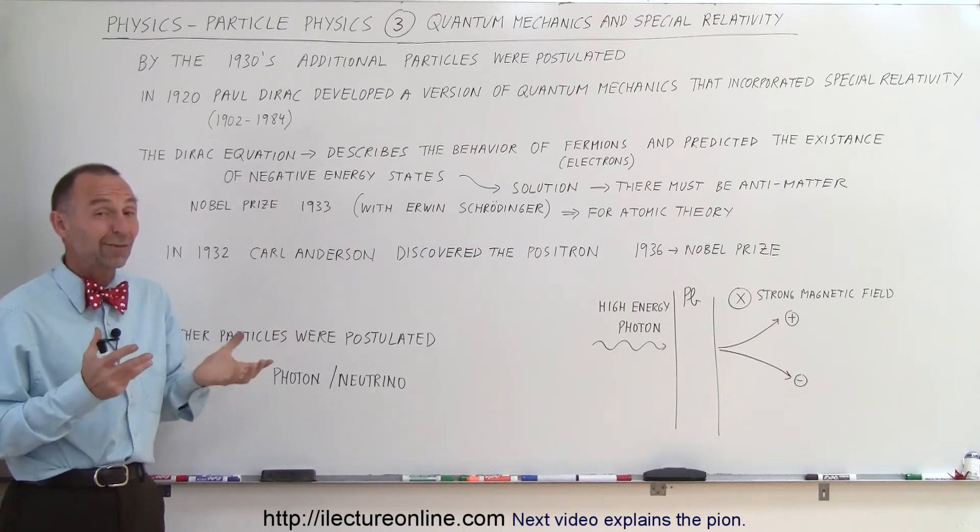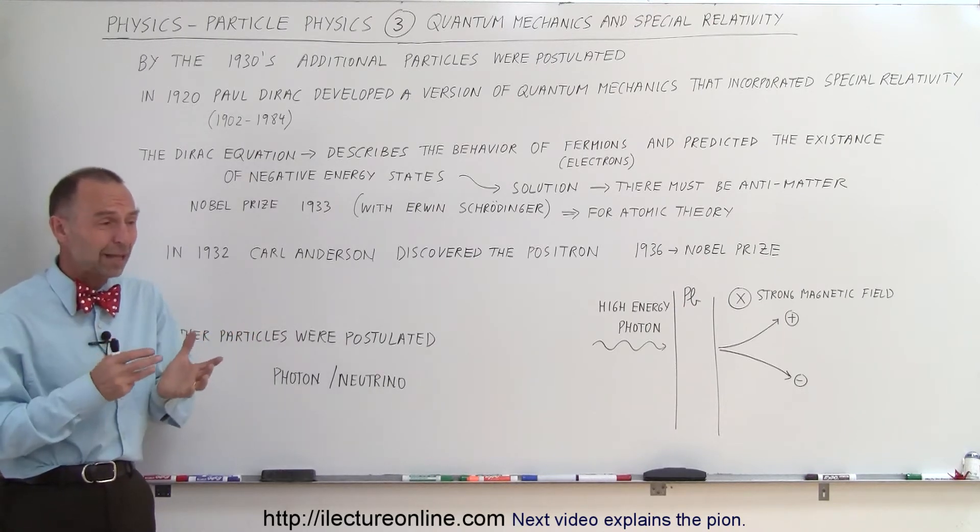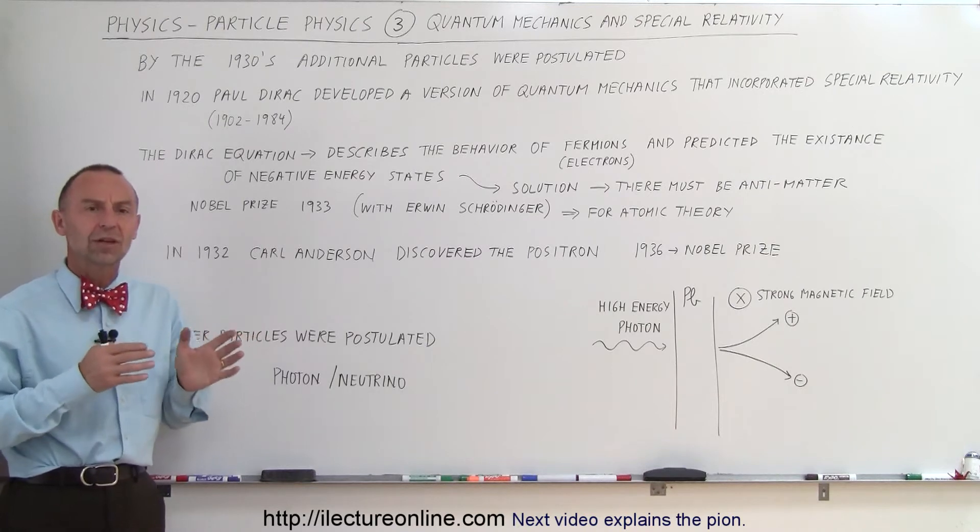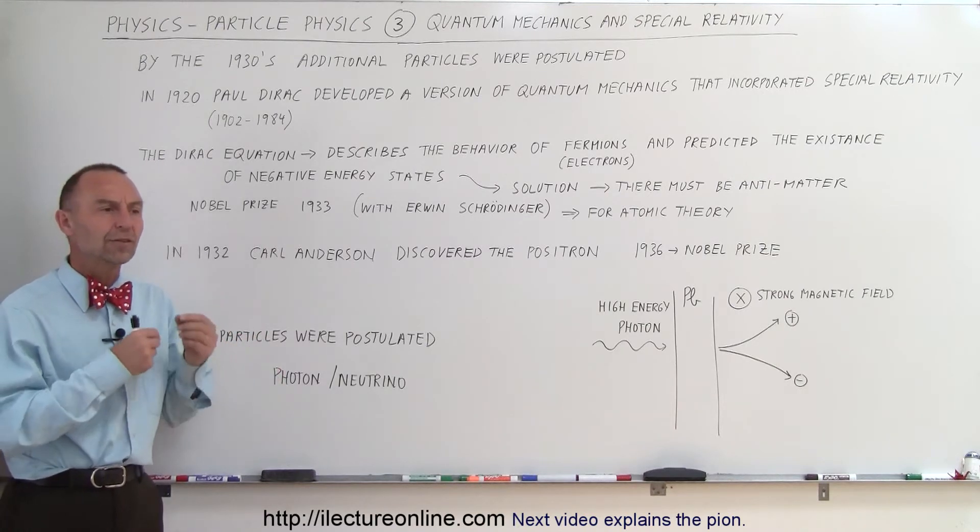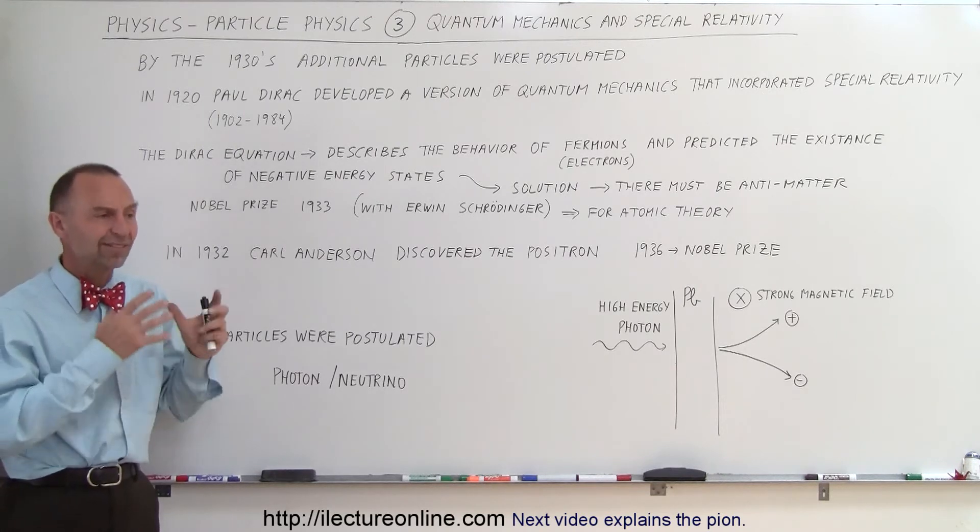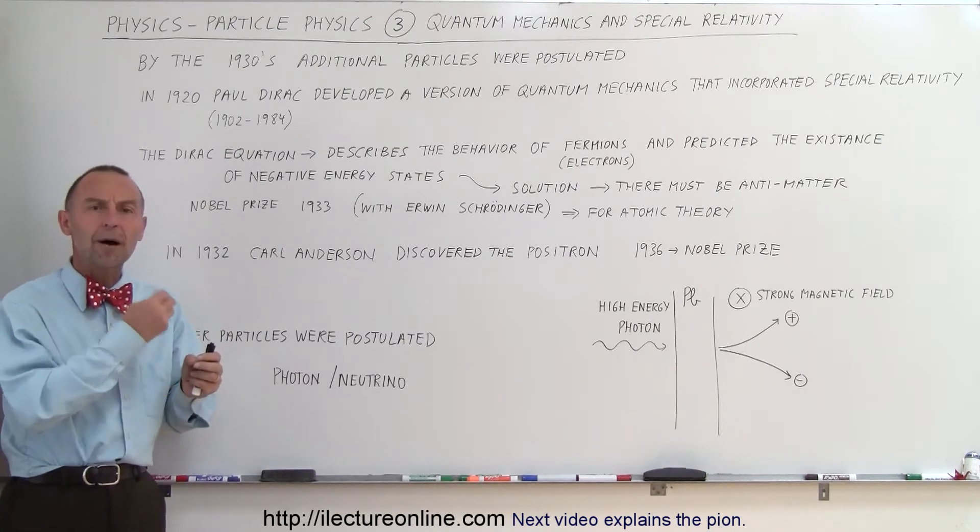So they worked out the equations and said the only way that we can really describe that and explain that is to assume that there may be such a thing as antimatter, a different form of matter. For example, a positive electron. Same mass, same everything, but a positive charge.